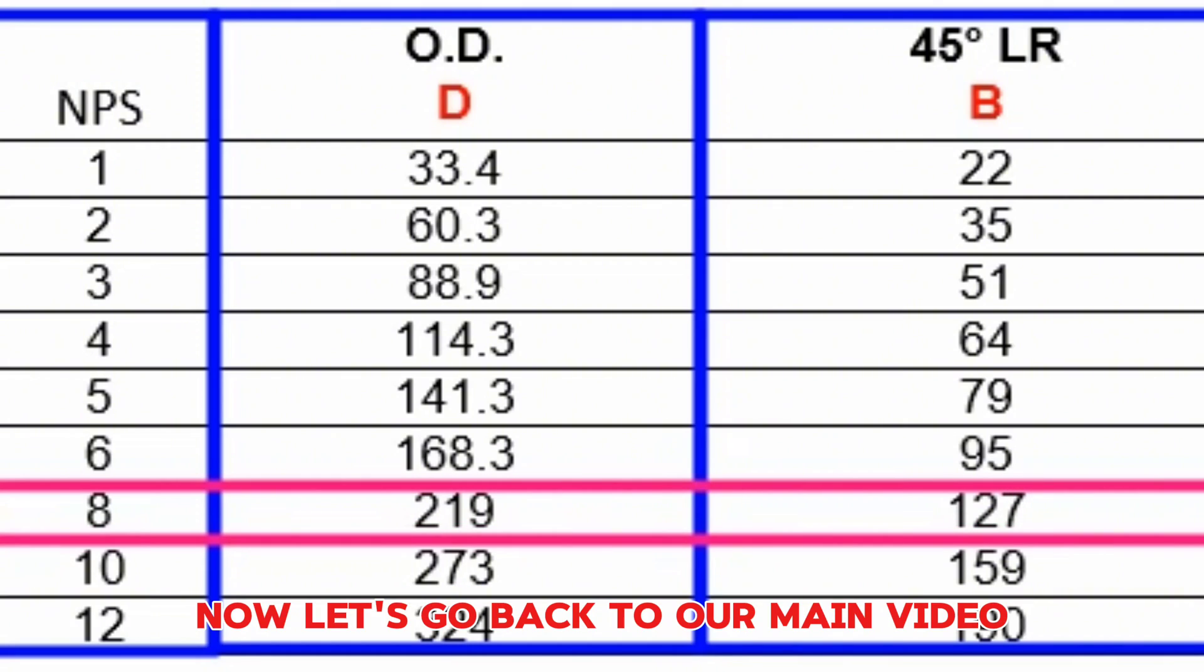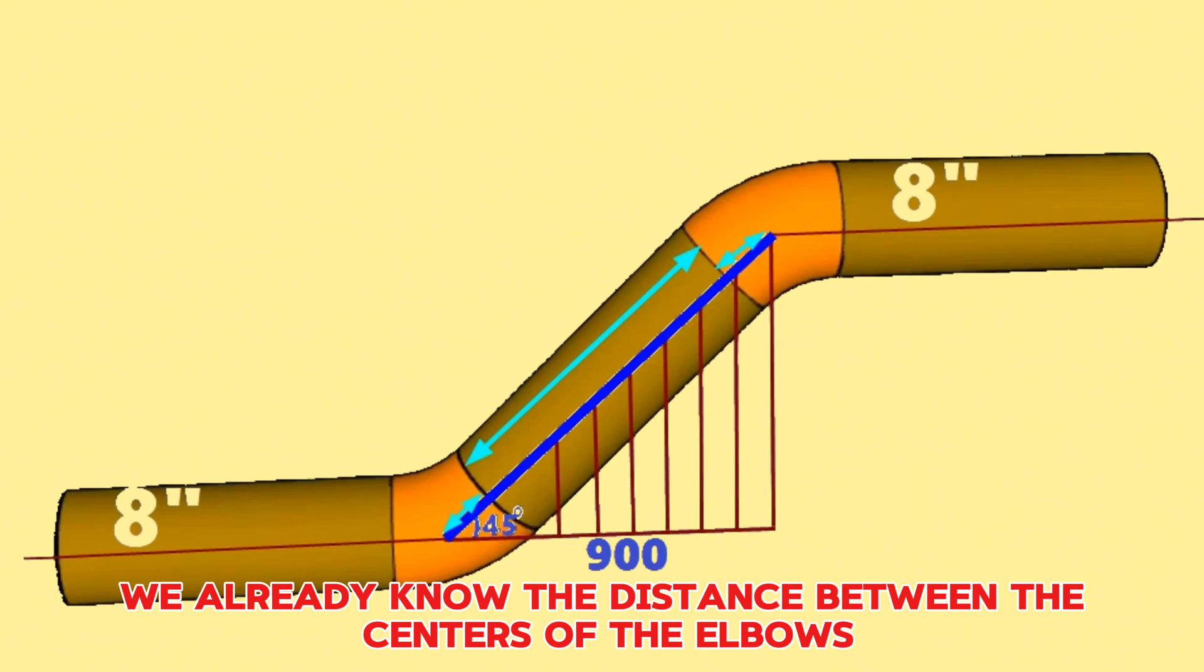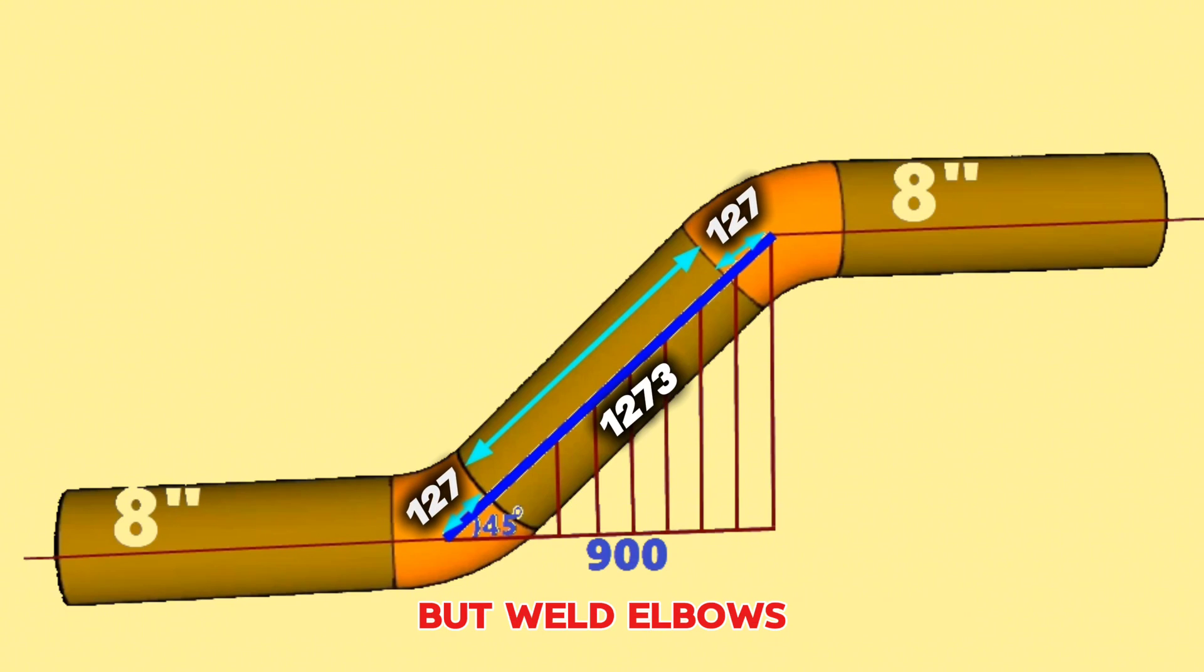Now let's go back to our main video. We already know the distance between the centers of the elbows and the lengths of the 45-degree butt weld elbows.